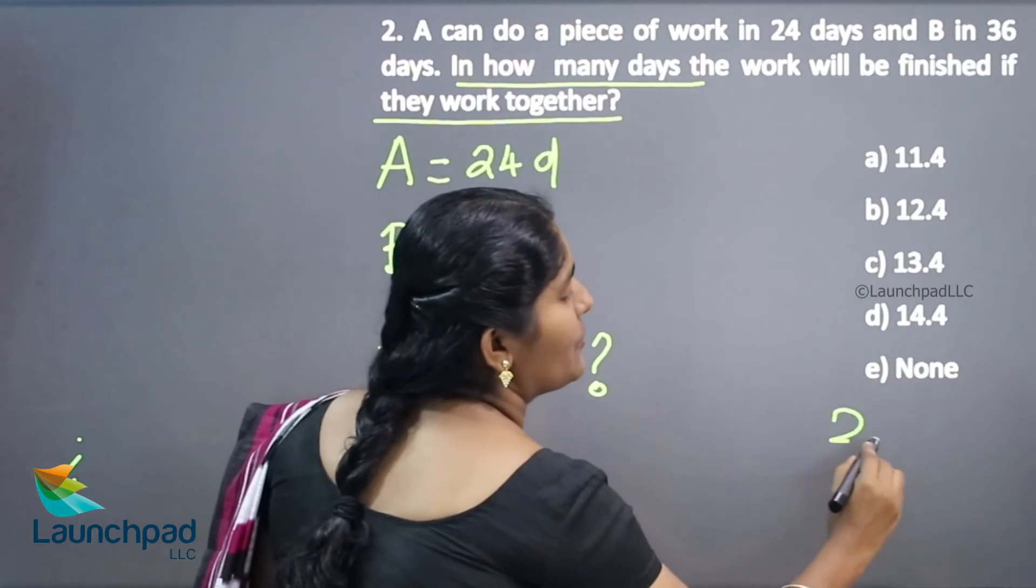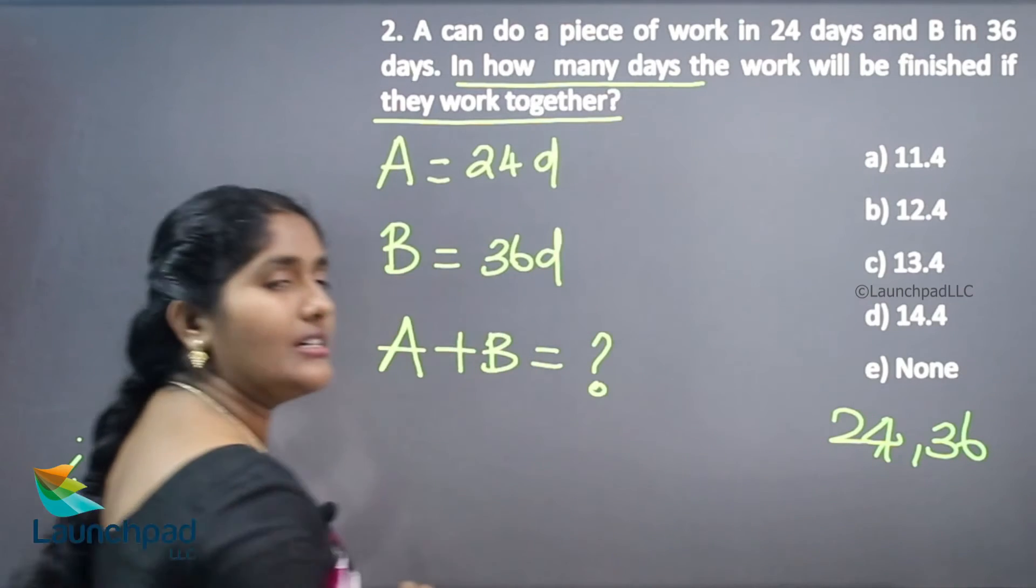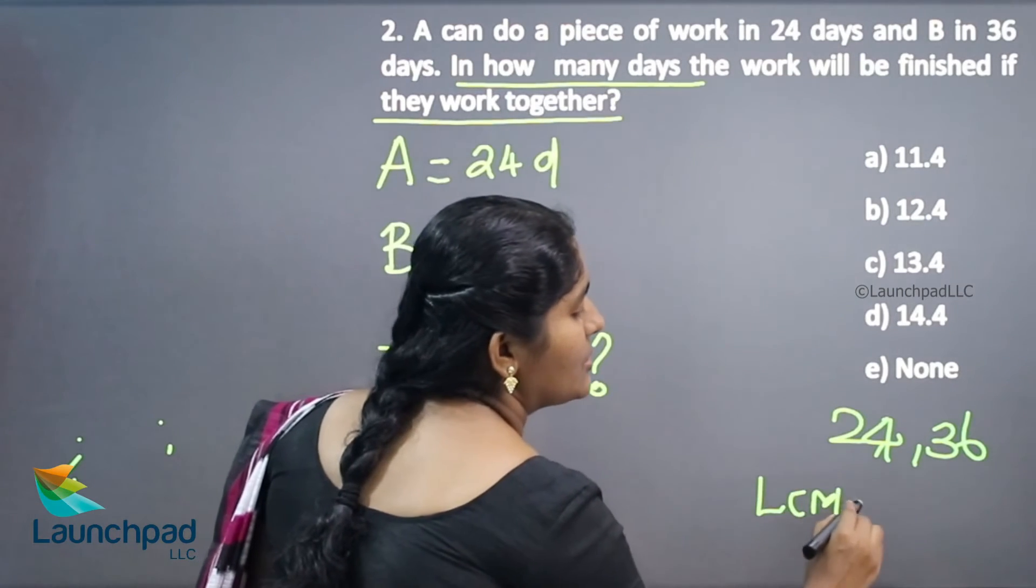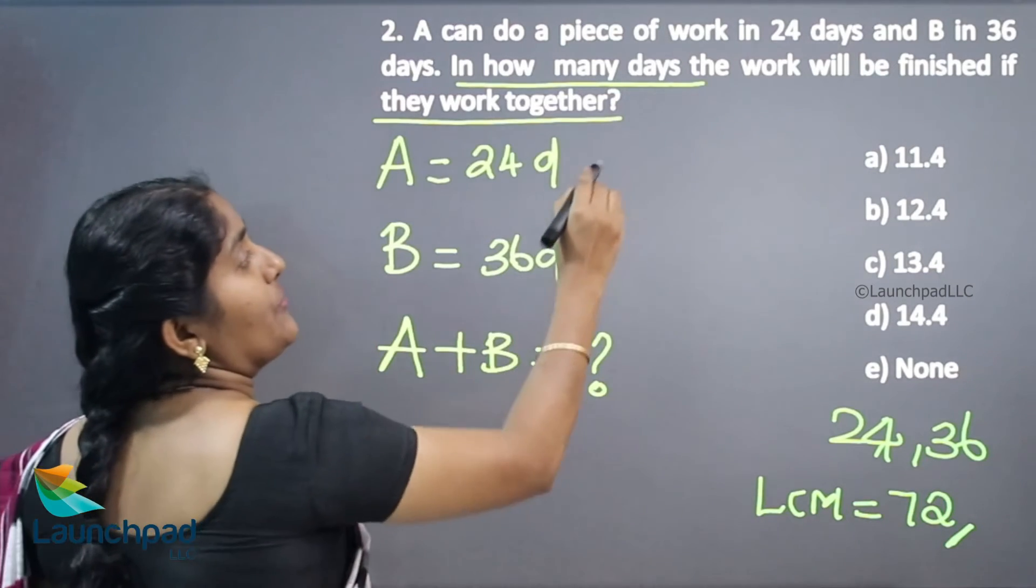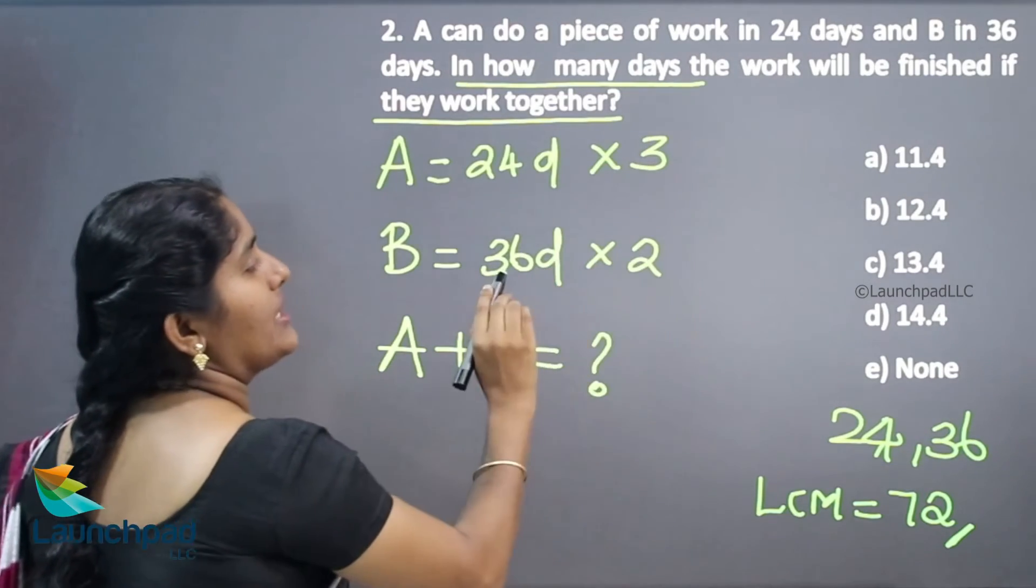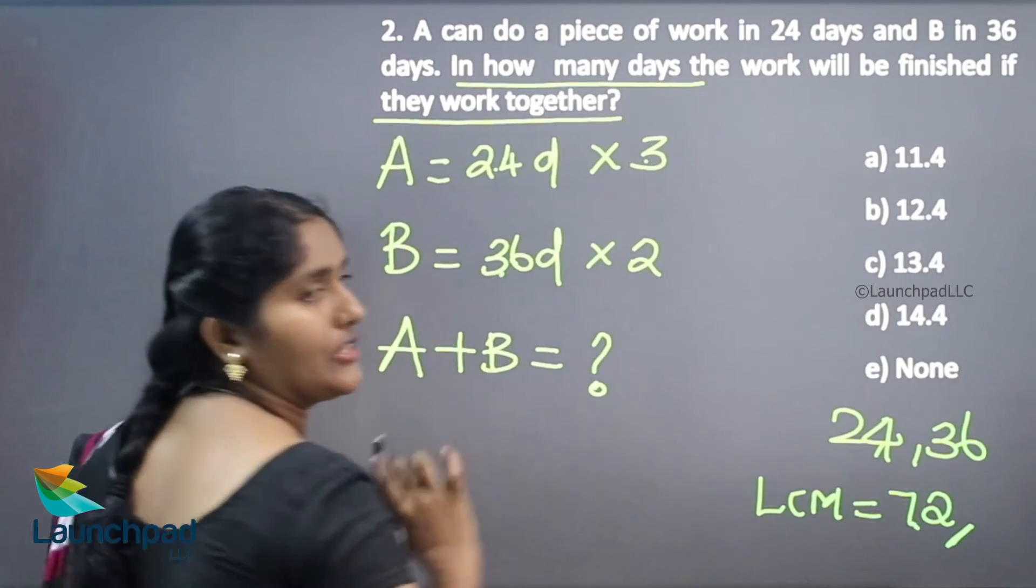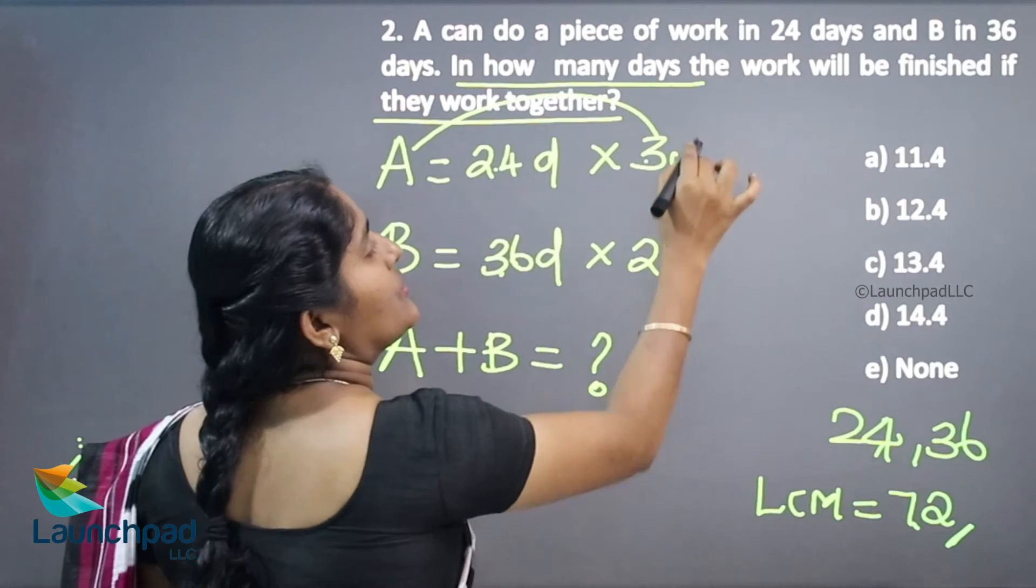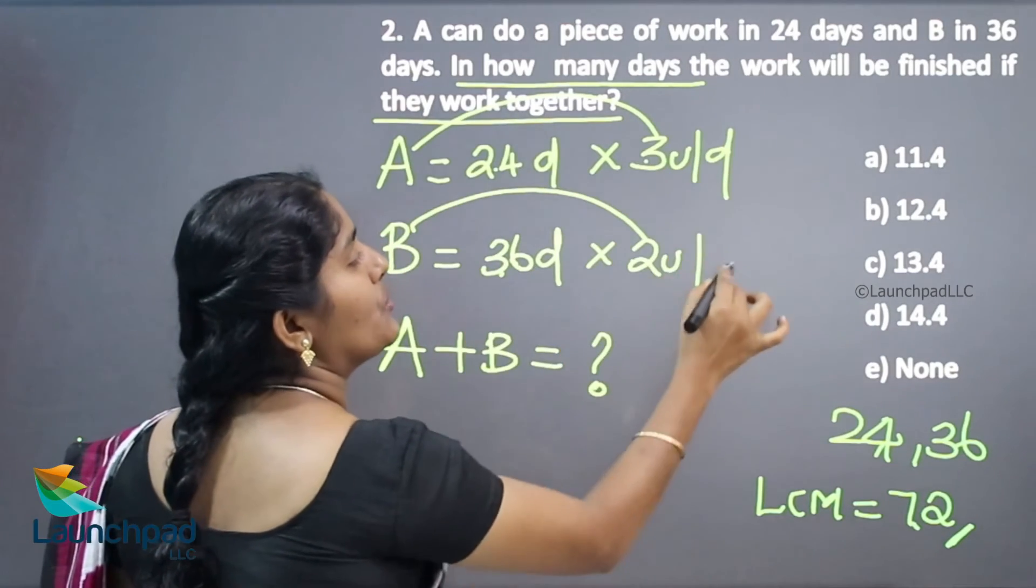What is the LCM of 24, 36? Your LCM is 72. 72, that meaning is this is your total work unit. So 24 into 3, 36 into 2. 36 into 2 is 72, 24 into 3 is 72. Now A's 1-day work unit is 3 units per day and B's 1-day work unit is 2 units per day.